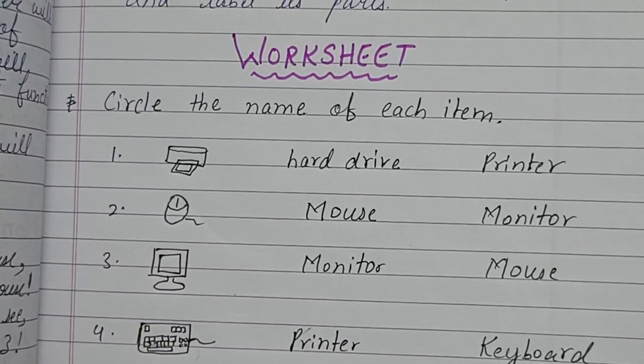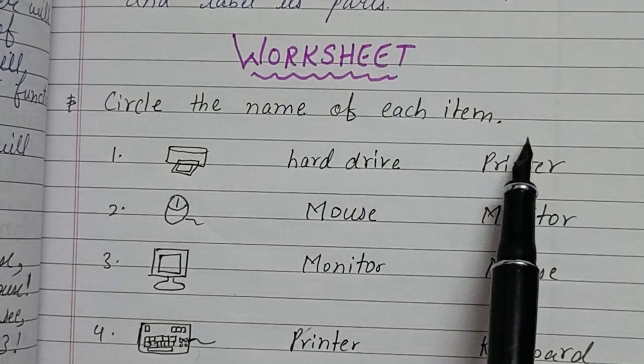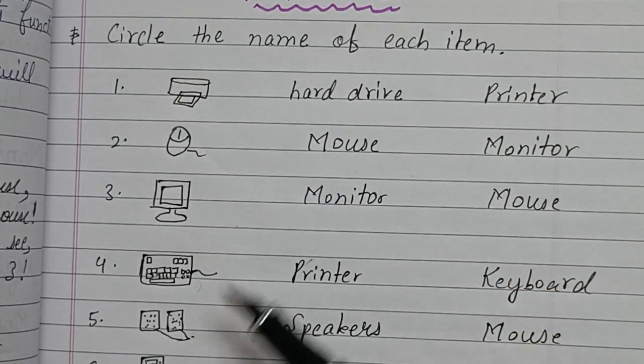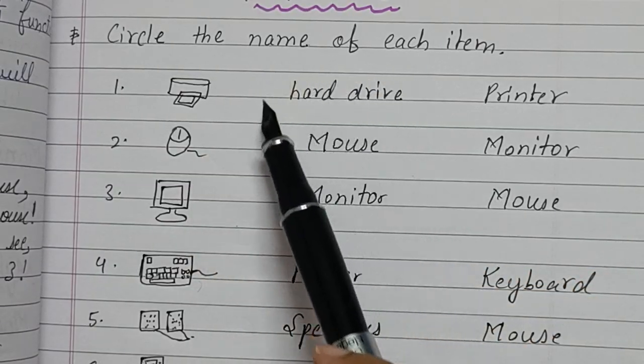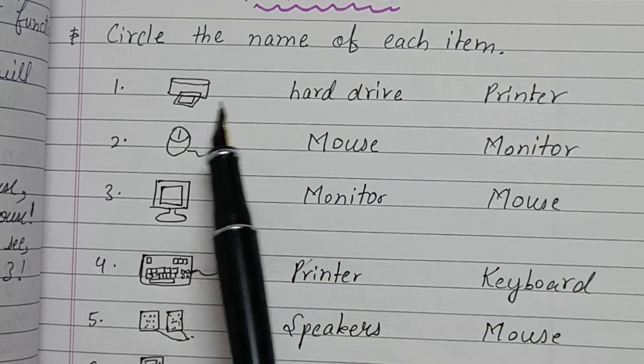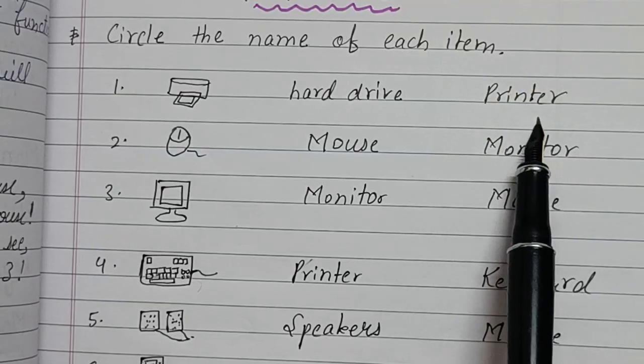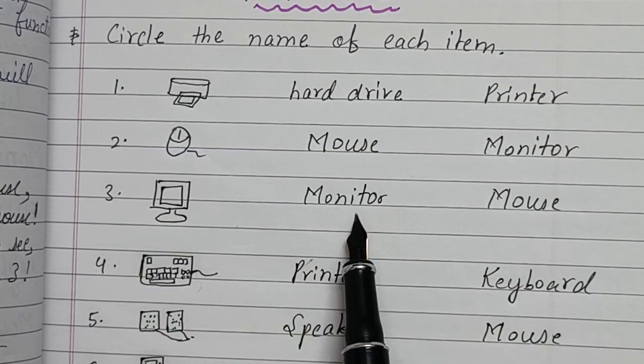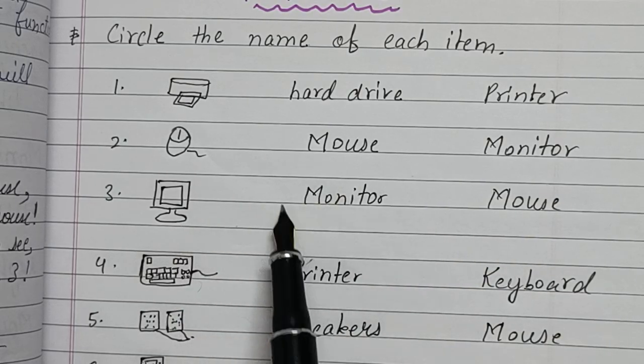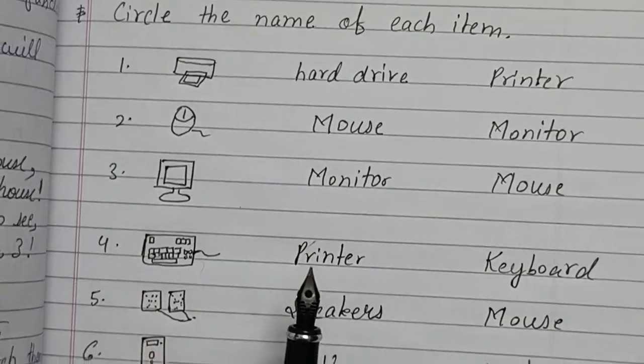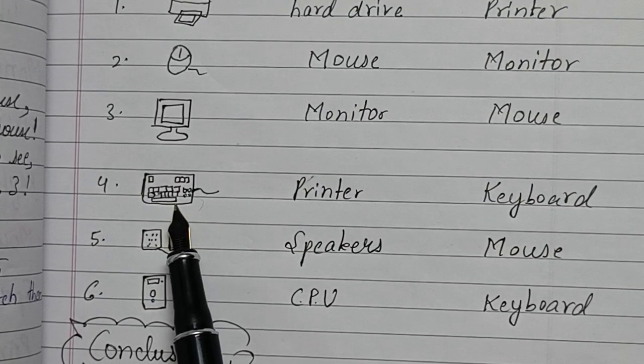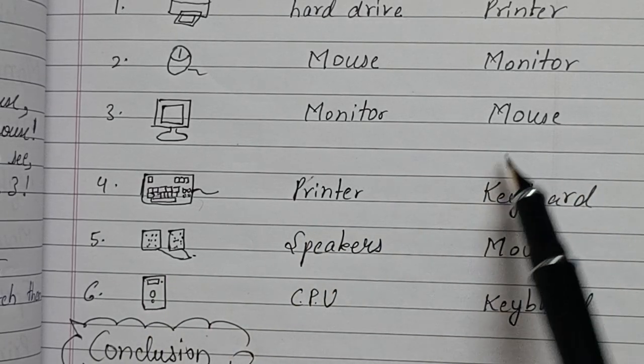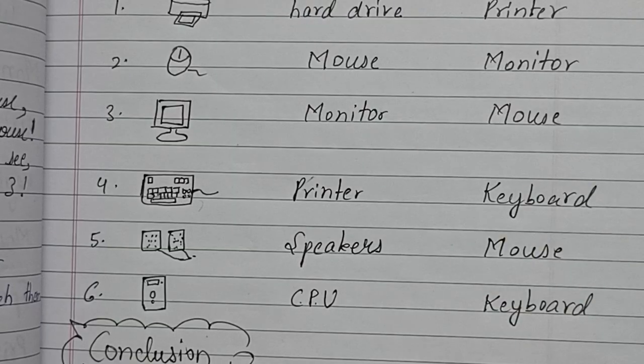Now worksheet: circle the name of each item. Items are listed here with pictures, and students will circle the correct answer. Is this hard drive or printer? This is printer. Mouse or computer? Mouse. Monitor or mouse? This is monitor. Then keyboard, speakers, and CPU. Students will circle the correct item.